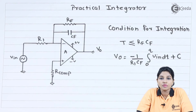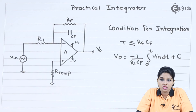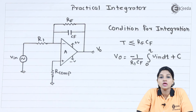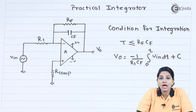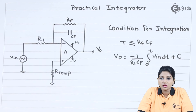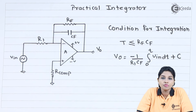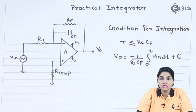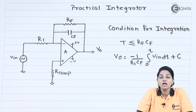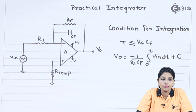In the case of a square wave — which is nothing but the extended version of a step input signal — if the input has magnitude positive A then we get an output with slope minus A, and if the input has magnitude minus A then we get an output with slope positive A. That means we can use the integrator circuit for the production of a triangular or ramp wave.